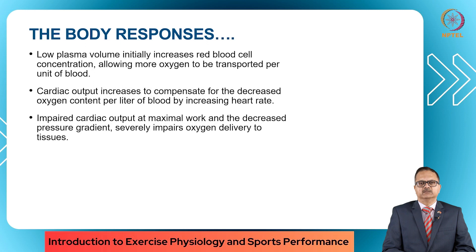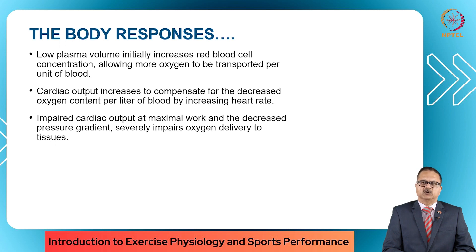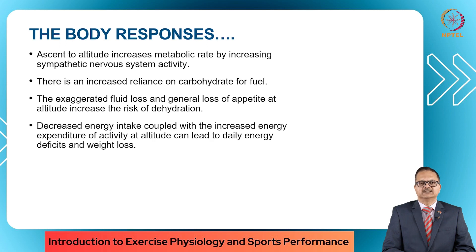Low plasma volume initially increases the RBC concentration, allowing more oxygen to be transported per unit of blood. The cardiac output increases to compensate for the decreased oxygen content per litre of blood by increasing the heart rate. At maximum work, the decreased pressure gradient severely impairs oxygen delivery to the tissues. When you ascend to altitude, there is an increase in the metabolic rate by increasing the activity of the sympathetic nervous system.